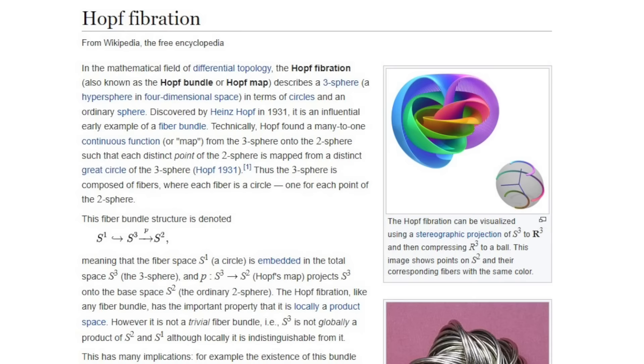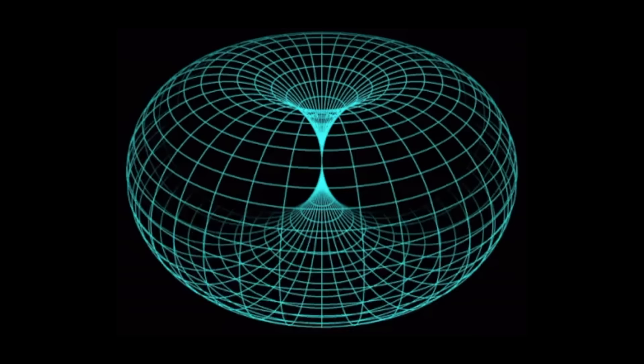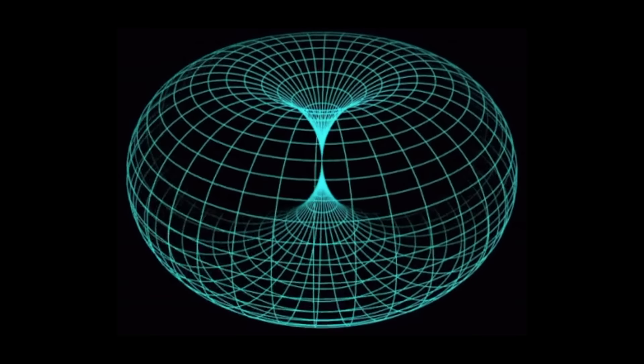I think we all know what I'm getting at. The donut, aka the torus, also known mathematically as hop vibrations or vortex rings.